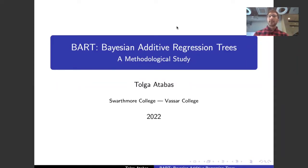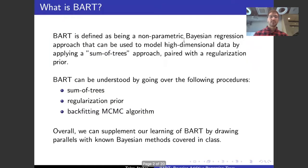It's a new method that was first published in 2010, and it builds off of similar techniques that we covered in class. It's defined as being a non-parametric Bayesian regression approach that uses a sum-of-trees method, and it also uses a regularization prior to help work with the data better. BART can be understood by going over the three main procedures: the sum-of-trees approach, the regularization prior, and an MCMC algorithm to get the posterior. Overall, we can always use the main fundamental Bayesian understandings and methods that we covered in class to understand BART.